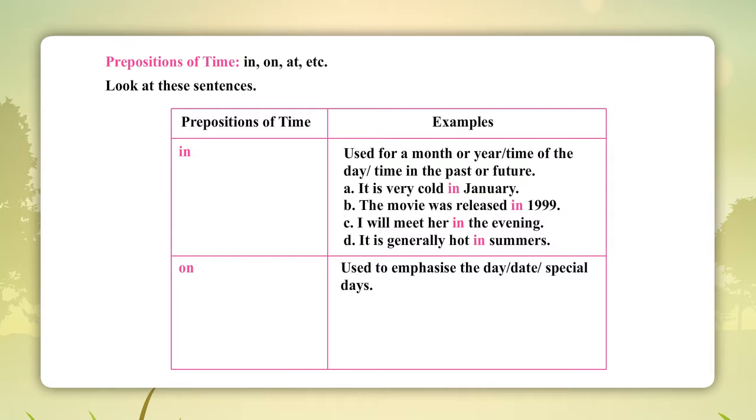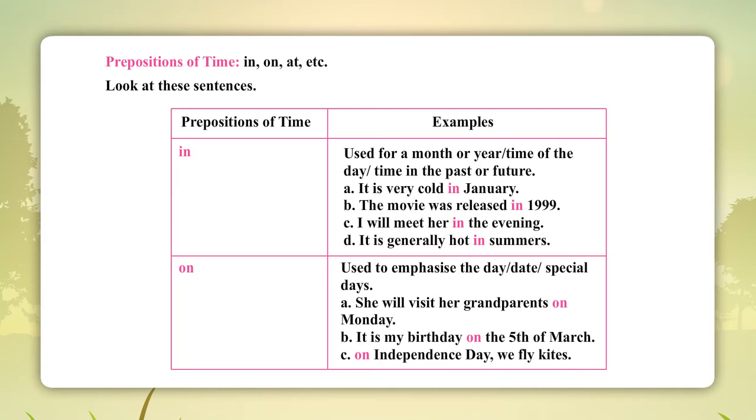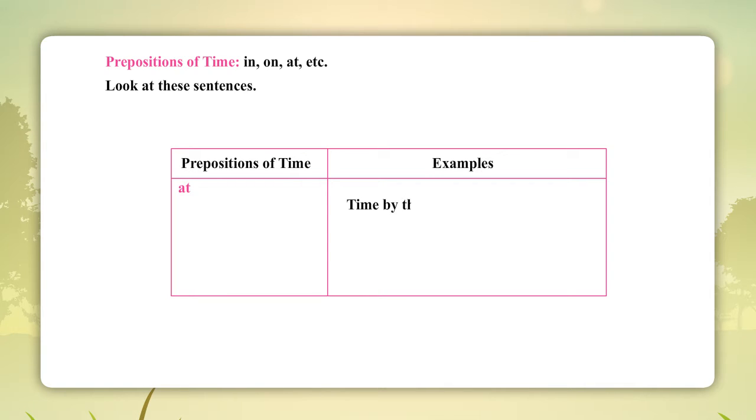On: Used to emphasize the day, date, special days. A. She will visit her grandparents on Monday. B. It is my birthday on the 5th of March. C. On Independence Day, we fly kites. At: Time by the clock, precise time. A. My dance class is at 5pm. B. We will talk at noon.